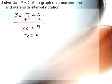Right now this is considered set builder notation if we were to enclose this with braces and the x such that x is less than 3. That would be set builder notation. We're going to talk about what it looks like with interval notation after we graph it on a number line.